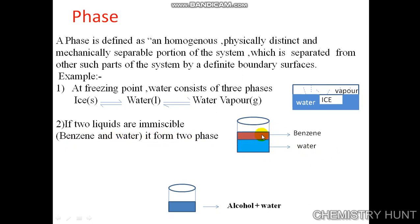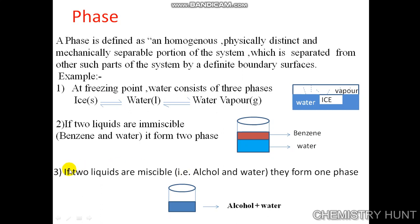See here, this is a container in which we took water and benzene. They are not miscible with each other, so we can see two phases — one of water and the other of benzene. The third example: if two liquids are miscible, like alcohol and water, they form one phase. In this beaker we have alcohol and water — they are miscible with each other, we are not able to separate them, so we see it as only one phase. The phase will be one.